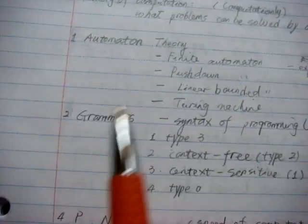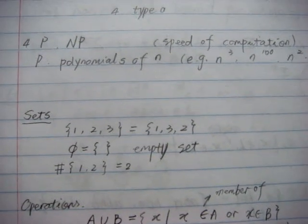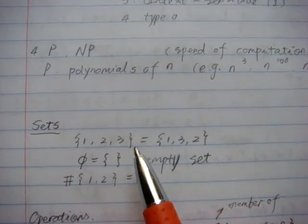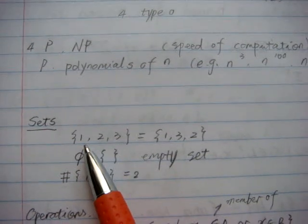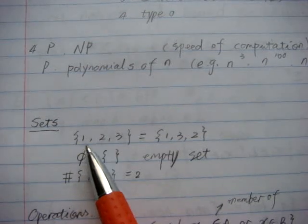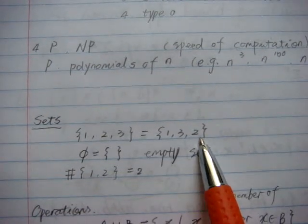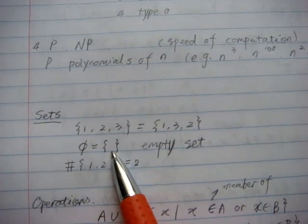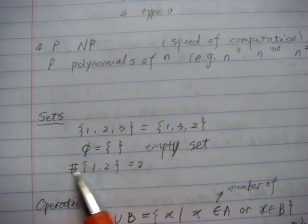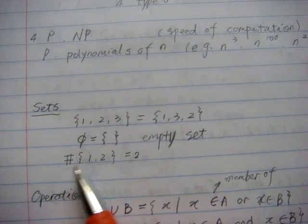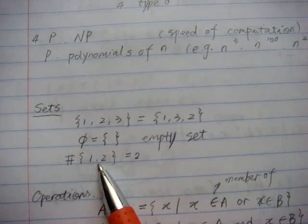Before we dive into automaton theory, we're going to first talk about sets. A set is a collection of objects that doesn't allow repetitions, and the order of the elements in the set doesn't matter. For example, the set {1, 2, 3} is equal to the set {1, 3, 2}. We also have empty sets which don't have any elements. We use this symbol to represent the number of elements in a set — for example, the number of elements in the set {1, 2} is 2.